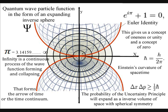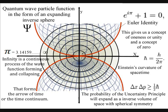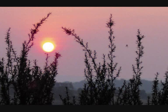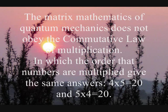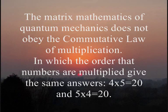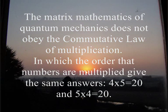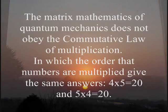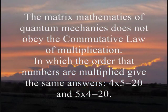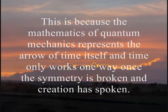In this theory, it is because time only moves forward that the matrix mathematics of quantum mechanics does not obey the commutative law of multiplication, in which x times y is always equal to y times x. This is because this process represents the passage of time itself, and therefore the mathematics only goes one way, just like the arrow of time.